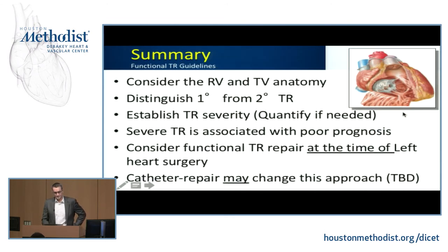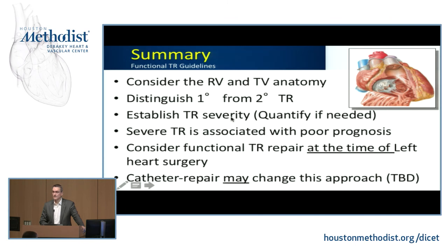One important comment about COAPT: we were lucky the COAPT study was positive, because if it had been negative — with 80% of TR being functional — the entire field of tricuspid interventions would have been dead. That's maybe an unsung benefit of a positive COAPT study. In summary: consider the RV and tricuspid anatomy; distinguish primary from secondary TR; have a reasonable estimate of TR severity; recognize that severe TR is always associated with bad prognosis; functional TR at the time of left-sided surgery is probably still underperformed. We don't know yet if catheter-based approaches will change outcomes.